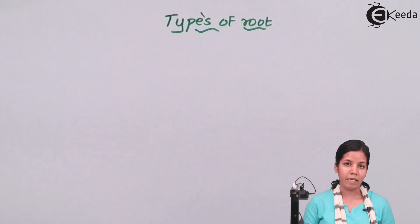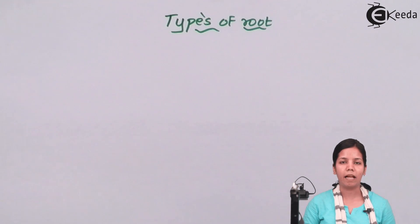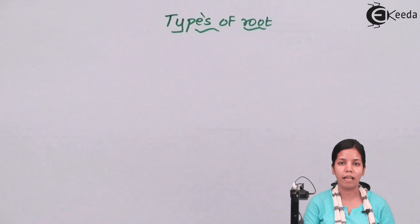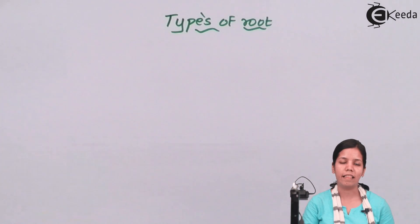Tap roots are basically seen in dicotyledonous plants. For example, mango — that's a dicot — and tap roots are seen in them.